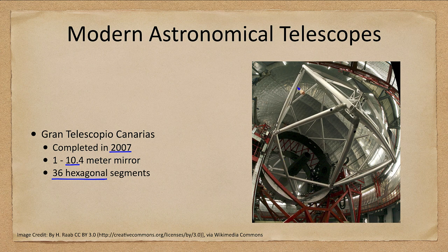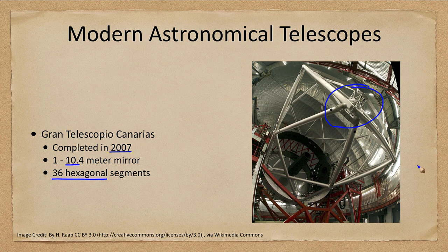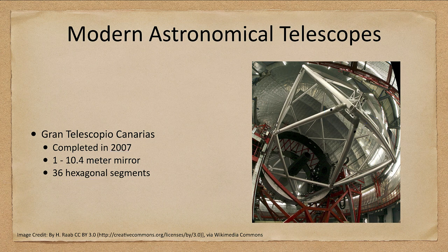Note the structure of these modern telescopes — it's very minimal. It's just enough structure to hold the secondary mirrors in place. You don't need a lot of that structure and can save a lot of weight by not having a completely enclosed tube. For smaller telescopes used outdoors you may need that tube to shield from stray light, but something enclosed within a dome really doesn't need all of that extra weight.